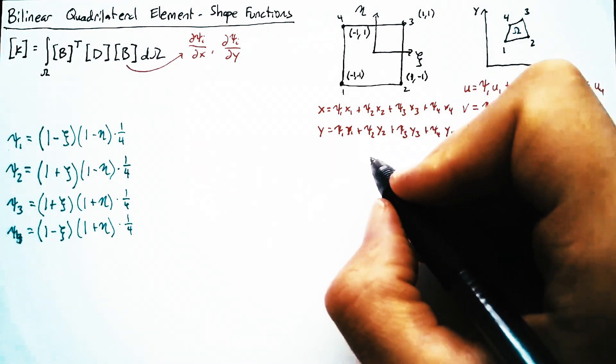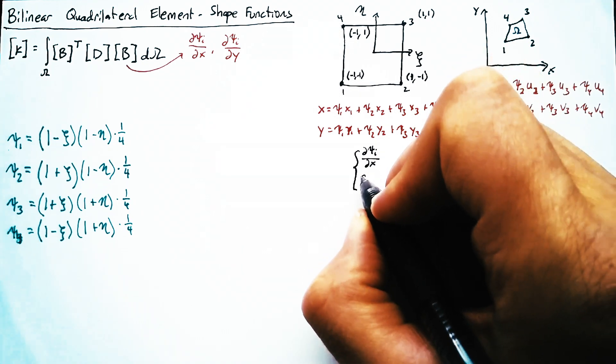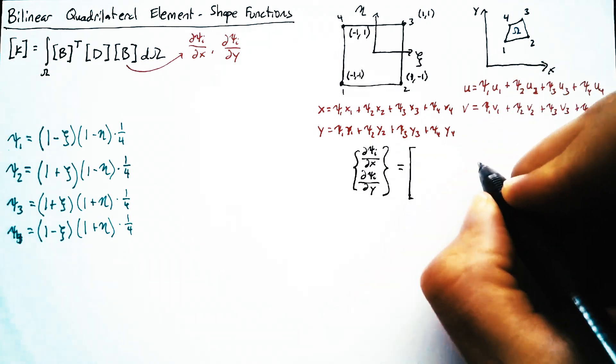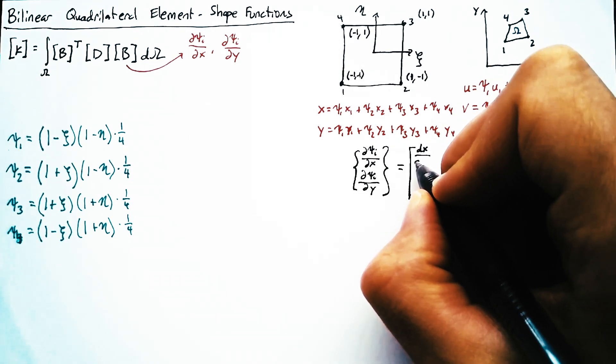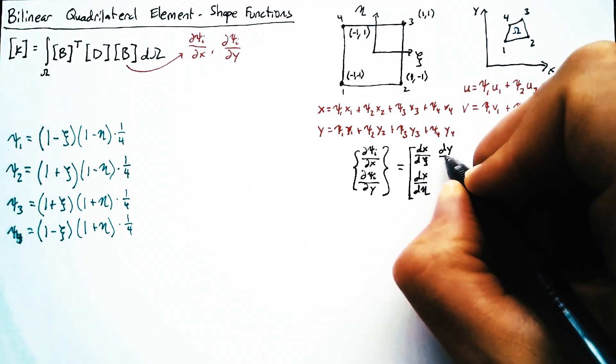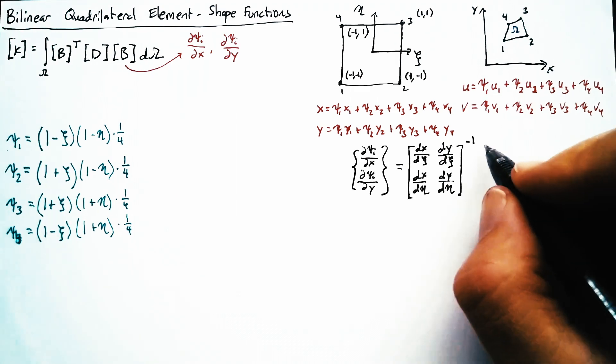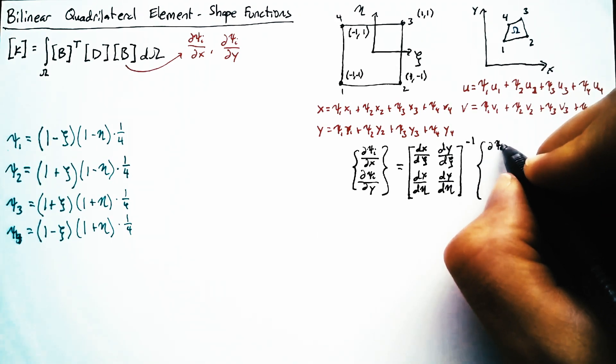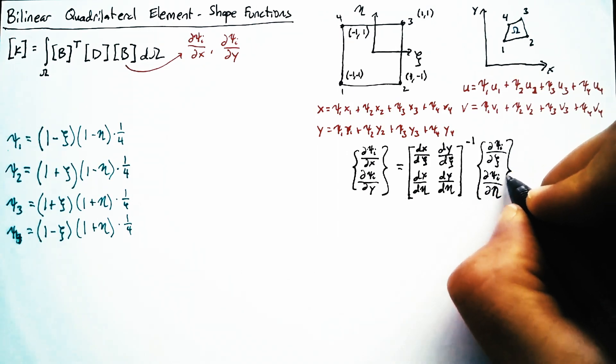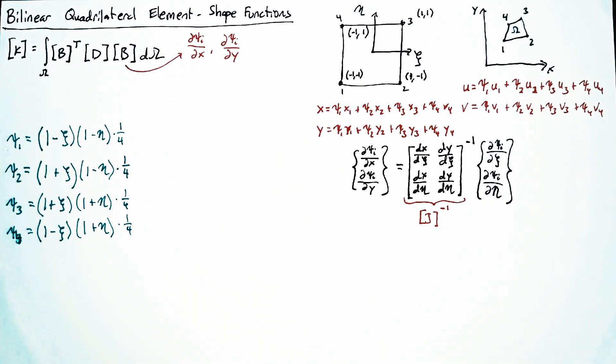Now, as a reminder, we are going to be using the Jacobian in order to calculate our d psi i's with respect to x and y. And that Jacobian is just a 2 by 2 matrix with our derivatives of x with respect to xi and eta and the same for y. And that Jacobian is inverted and multiplied by our derivatives of psi i with respect to xi and eta. So again, we call this the Jacobian and it is inverted.